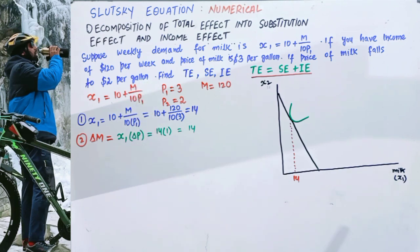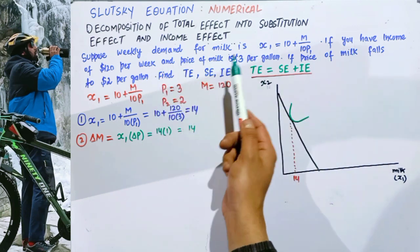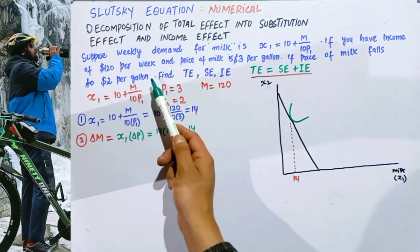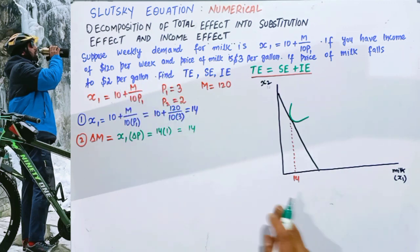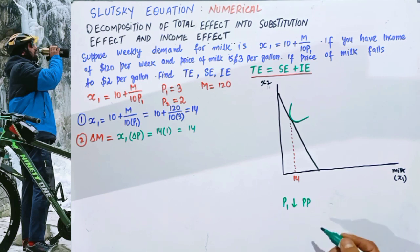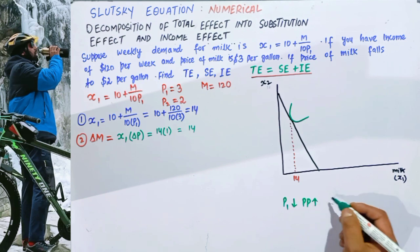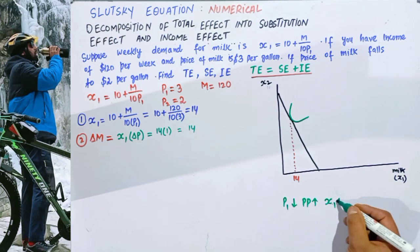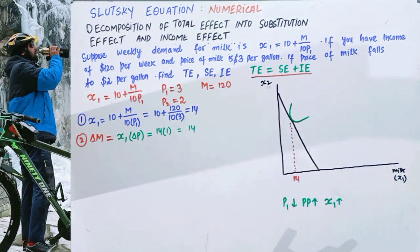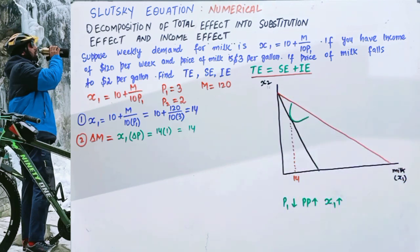We are told that the price of milk has fallen from $3 to $2 per gallon. When the price of milk falls, purchasing power (real income) will increase, and so the quantity demanded of milk will also increase. On the graph, the initial black budget line will pivot outward to the right, giving us a new budget line.